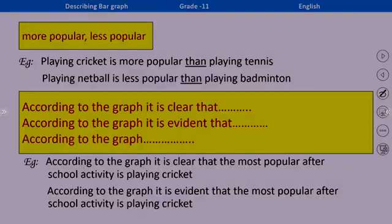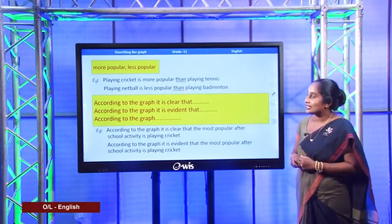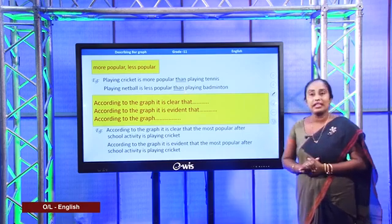Now we come to the last sentence of our description. You can use these language expressions: 'According to the graph, it is clear that the most popular after-school activity is playing cricket.' Or: 'According to the graph, it is evident that the most popular after-school activity is playing cricket.' Now we have learned all the language tips to describe a bar graph. Let's move on to an activity.